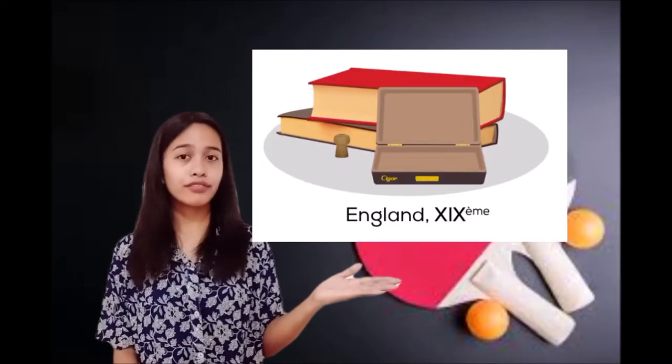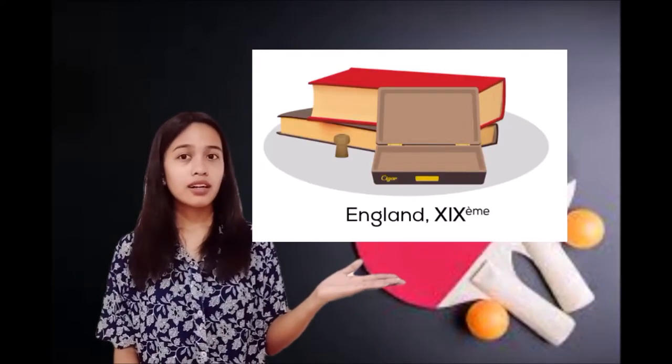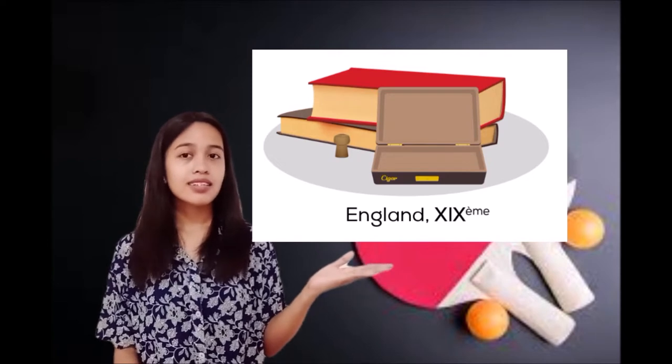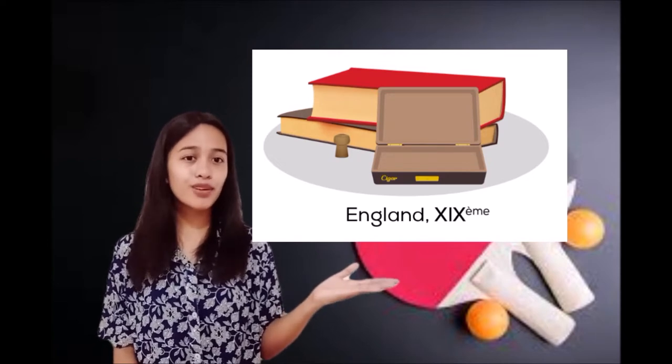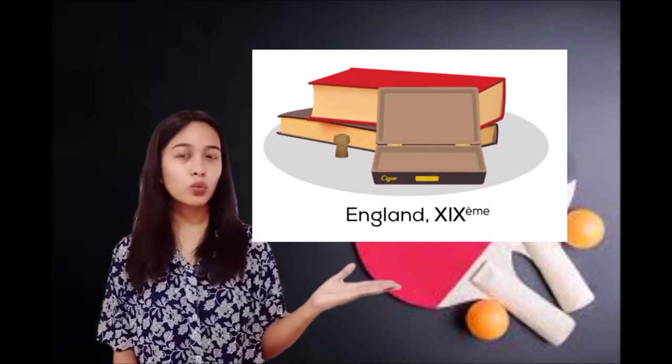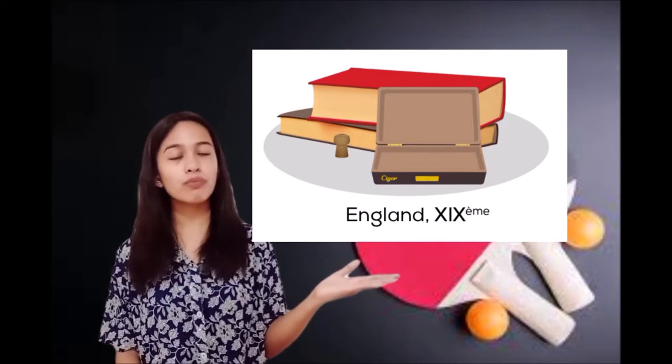Here are examples of a cigar box, books, and champagne cork, which were used by Victorian society.